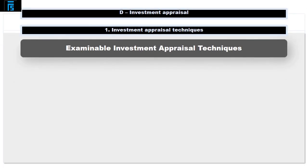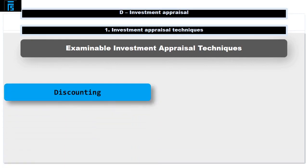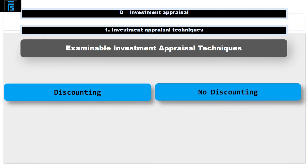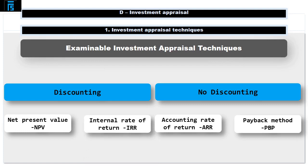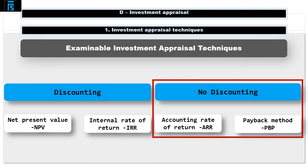There are four main investment appraisal techniques that are examinable. Two involve a process called discounting — building in the time value of money — and two do not. The two that don't involve discounting are the accounting rate of return (ARR) and payback period (PBP). The two that do involve discounting are net present value (NPV) and internal rate of return (IRR). We'll start with the non-discounting techniques, then work through the ones involving the time value of money, and then develop net present value techniques for longer questions.